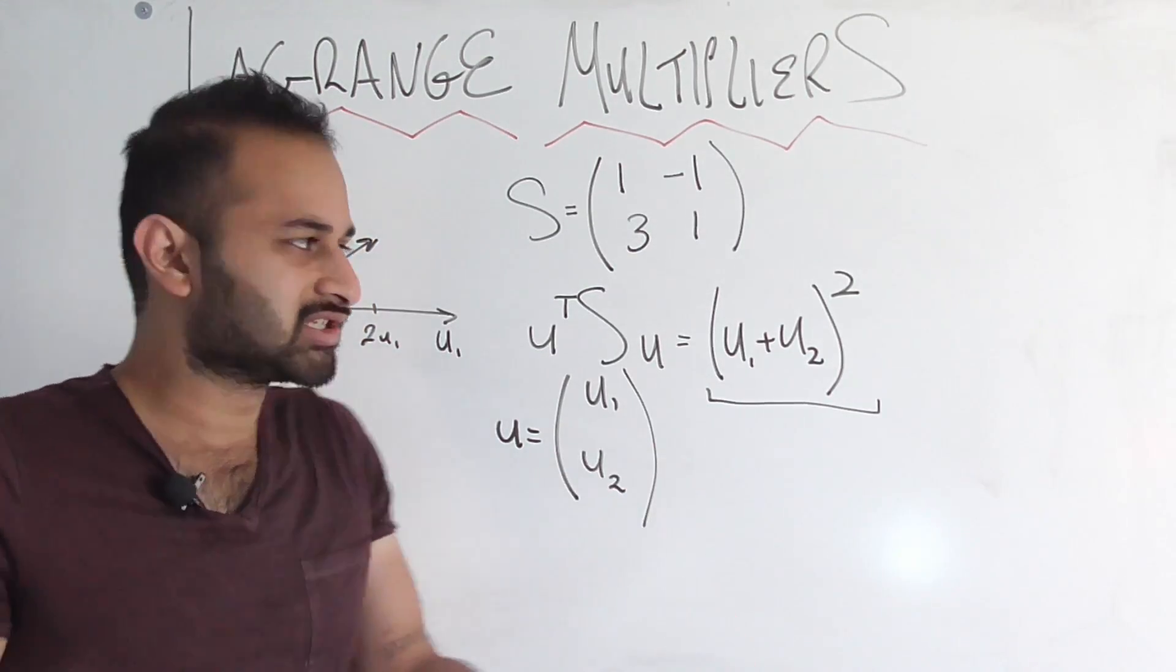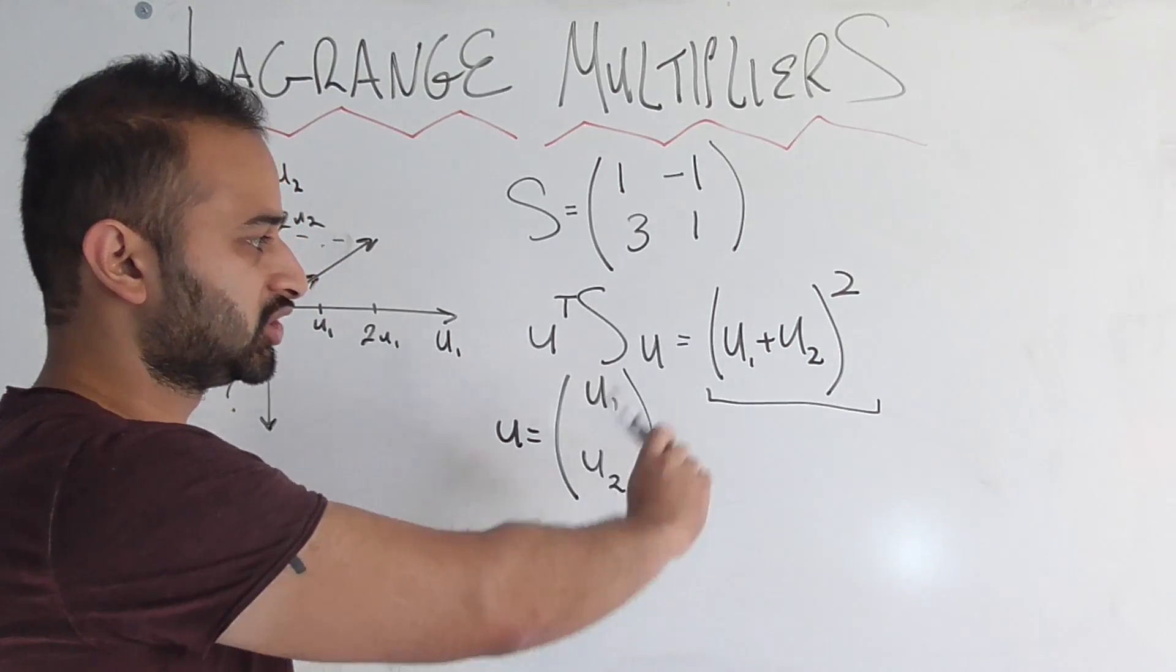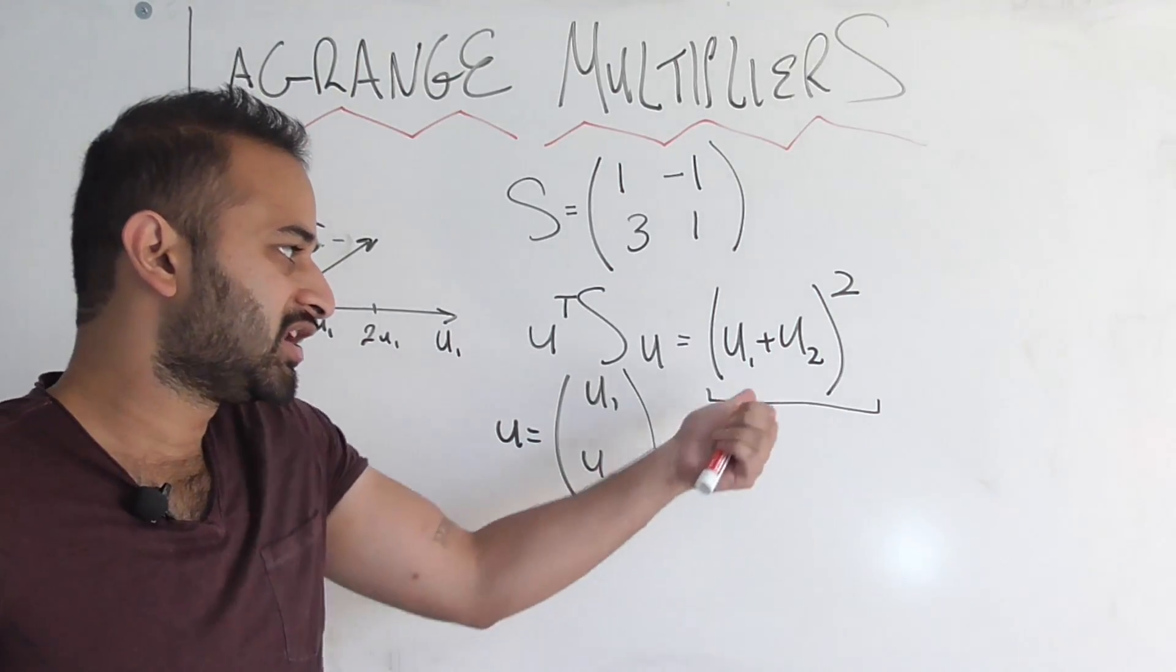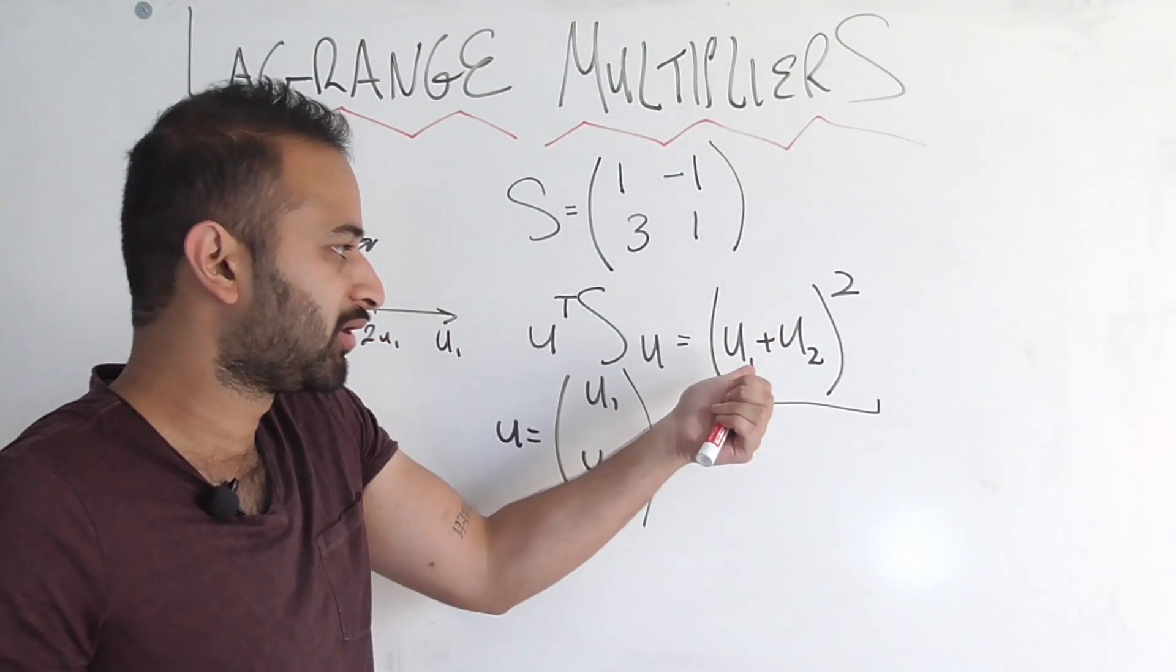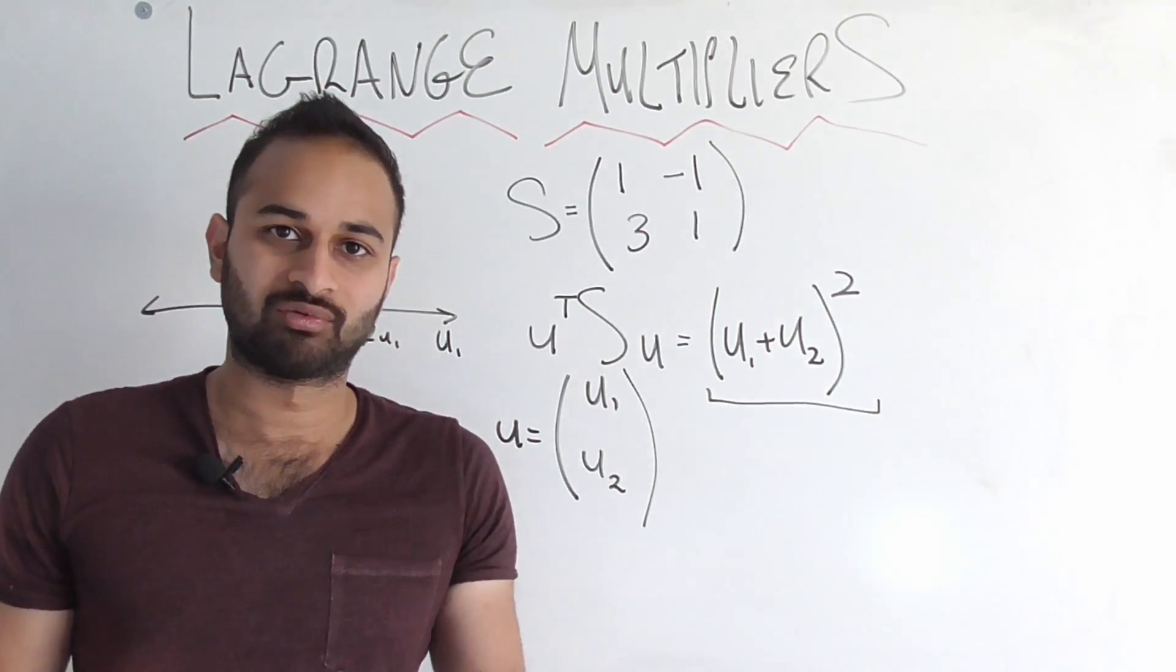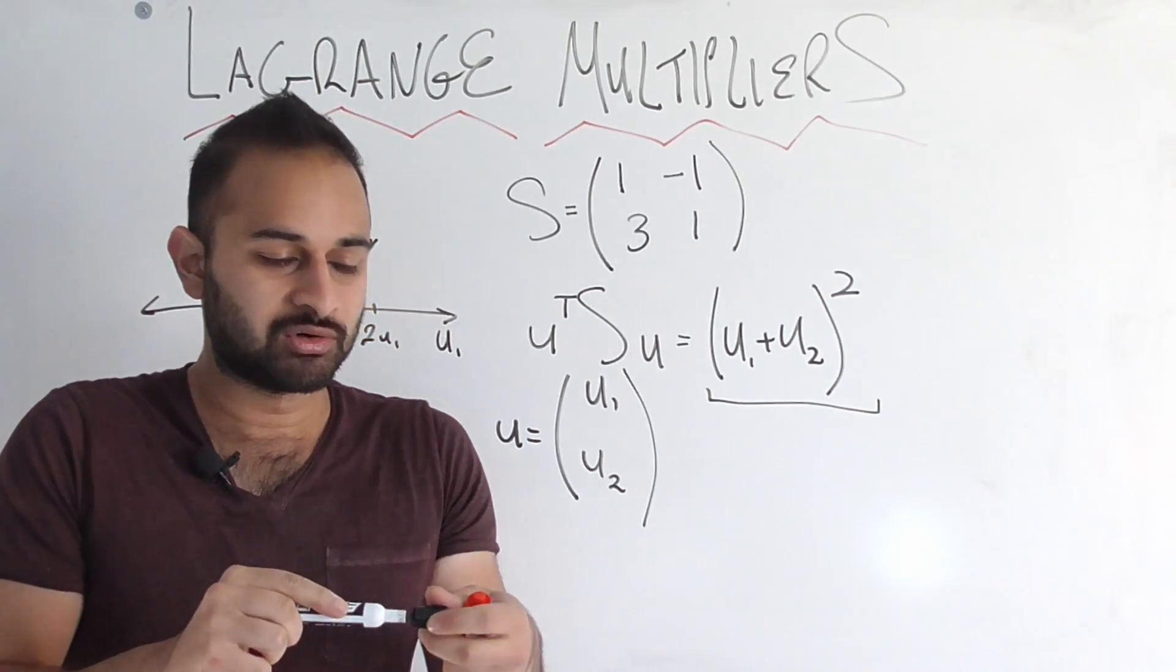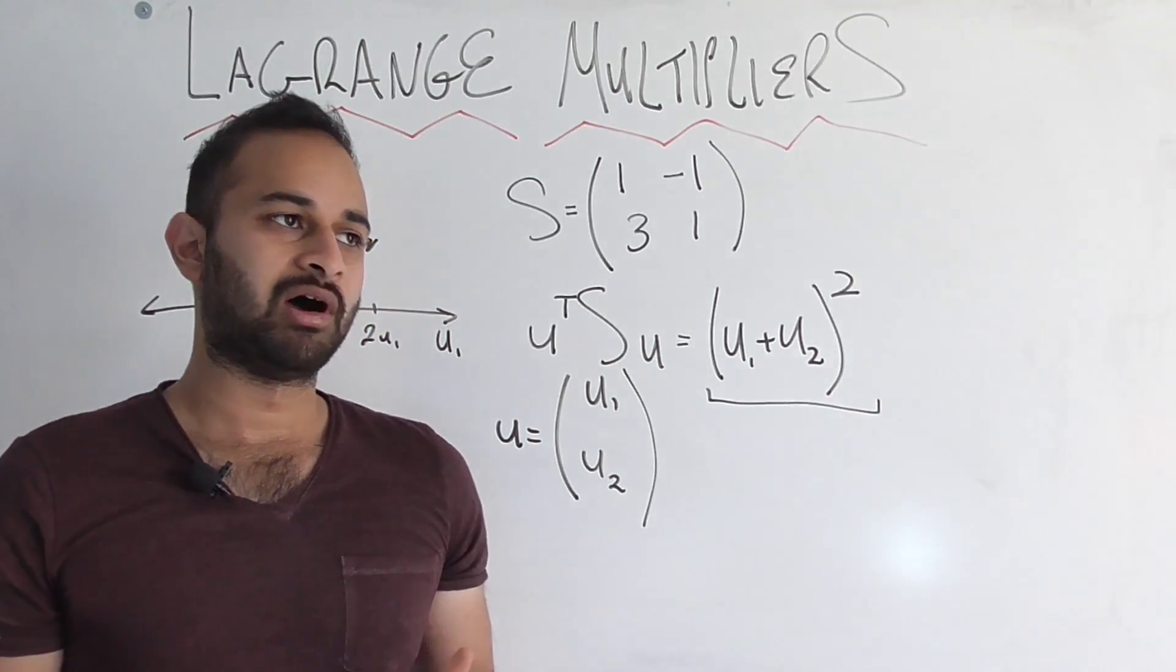That doesn't really make any sense. We don't want that to happen, because if we were to do a traditional calculus problem, a traditional maximization problem on this, it would tell us to set U1 and U2 as both as positive infinity. Because if we do that, we're going to get infinity as our success, and that's amazing. But that doesn't help us understand which direction we're supposed to go in.